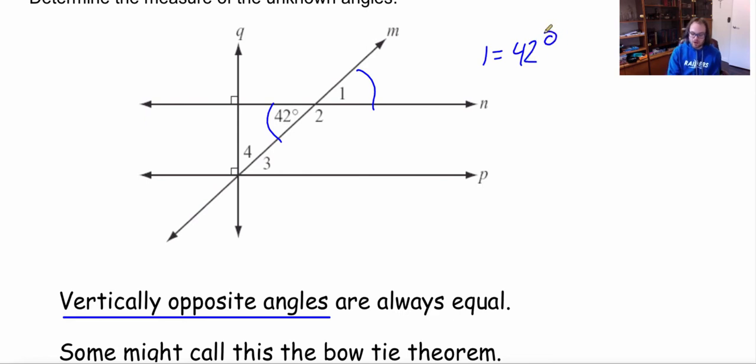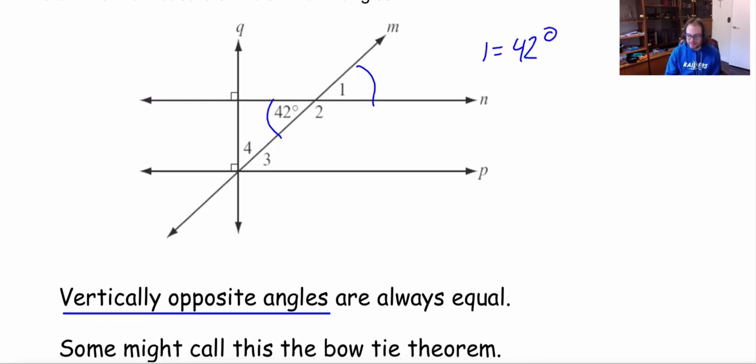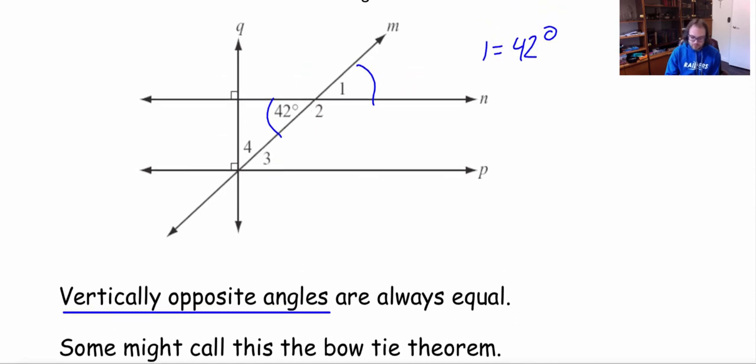Now another thing we must always look at is straight lines. Okay so if I have a we're always going to try and find straight lines so right here I have a straight line. That is a straight line is always 180 degrees. So then if this is 42 this side here is going to be 180 minus 42 which is going to give me a total of 138 degrees.